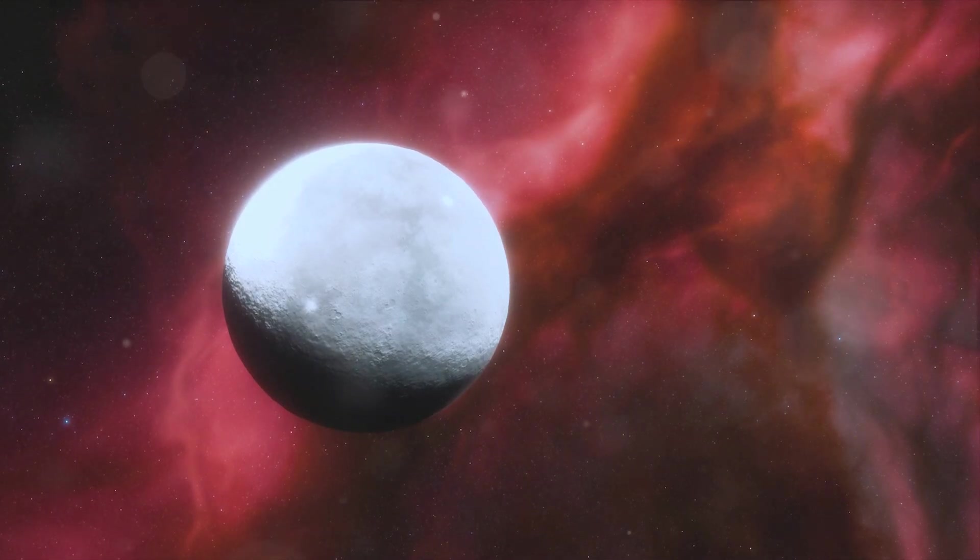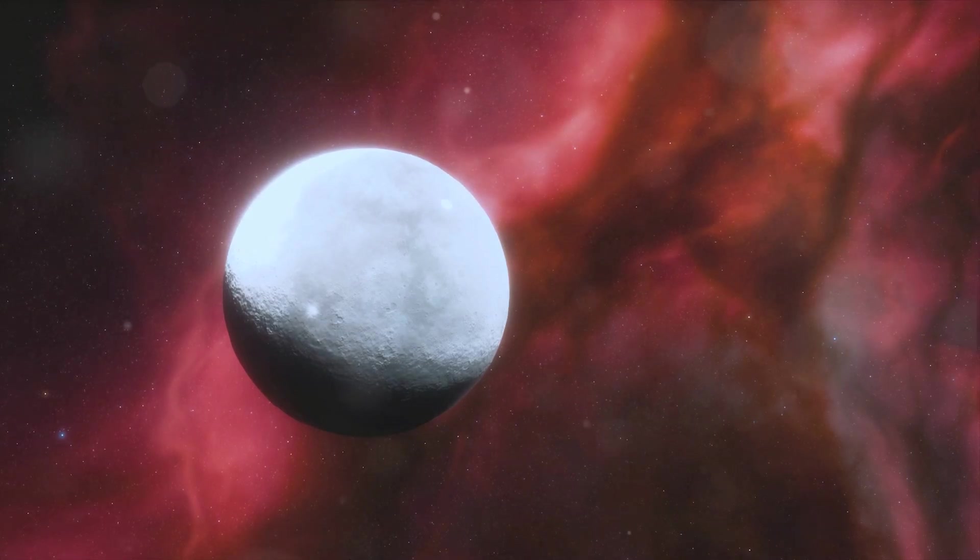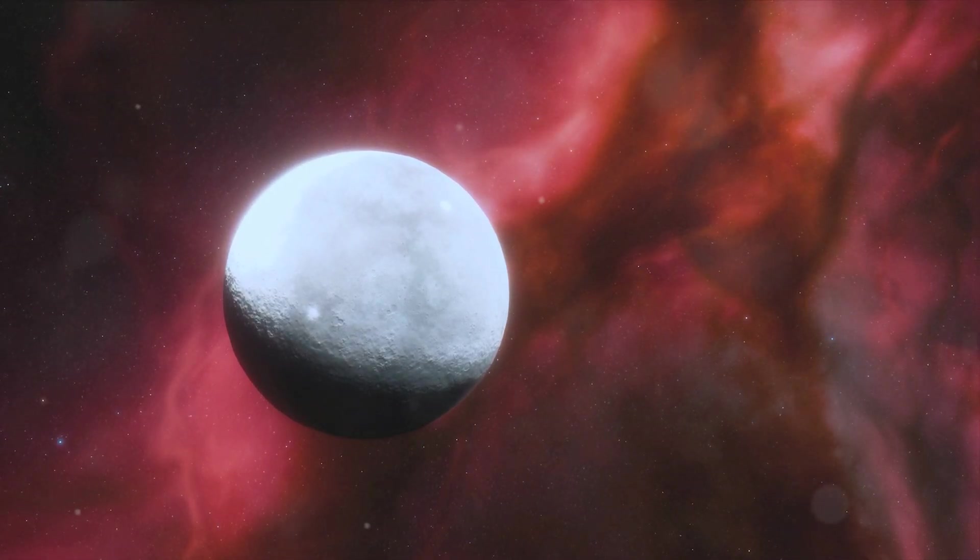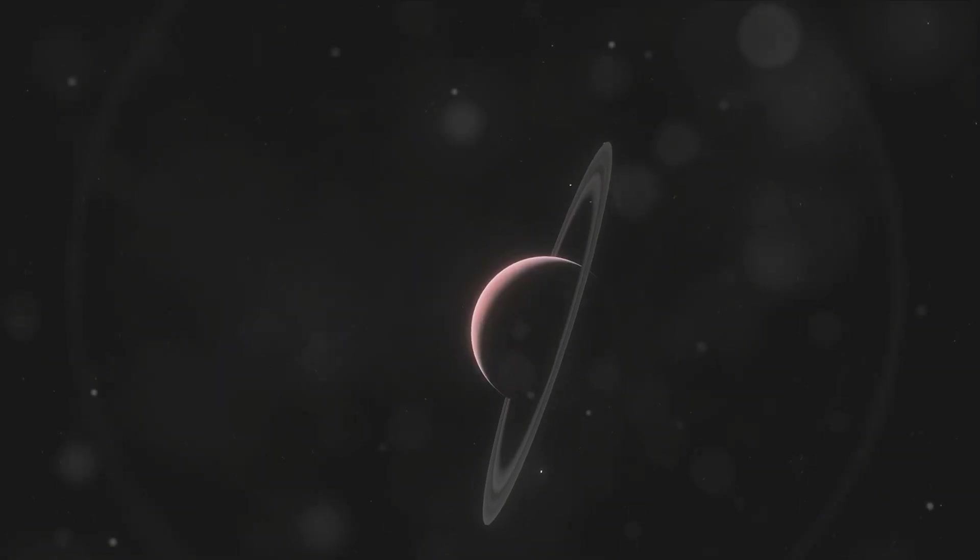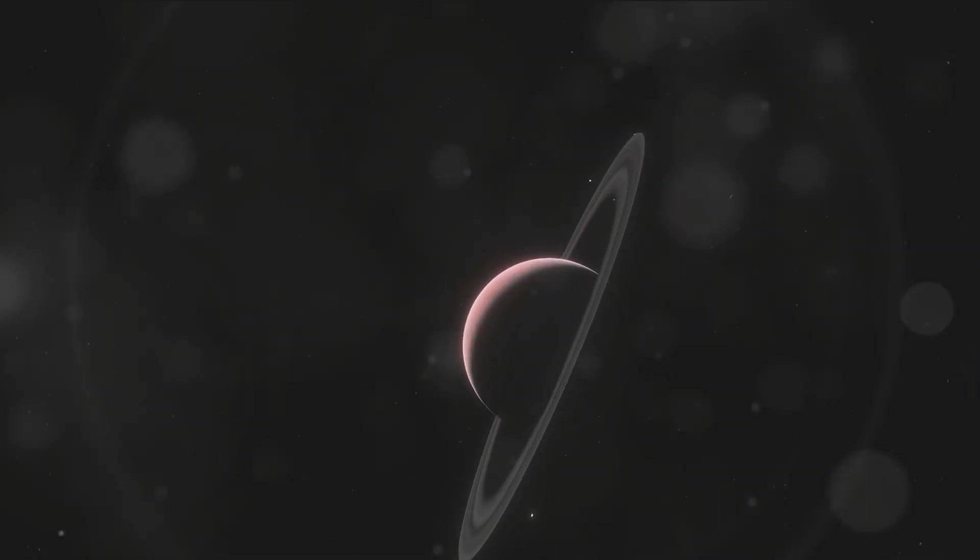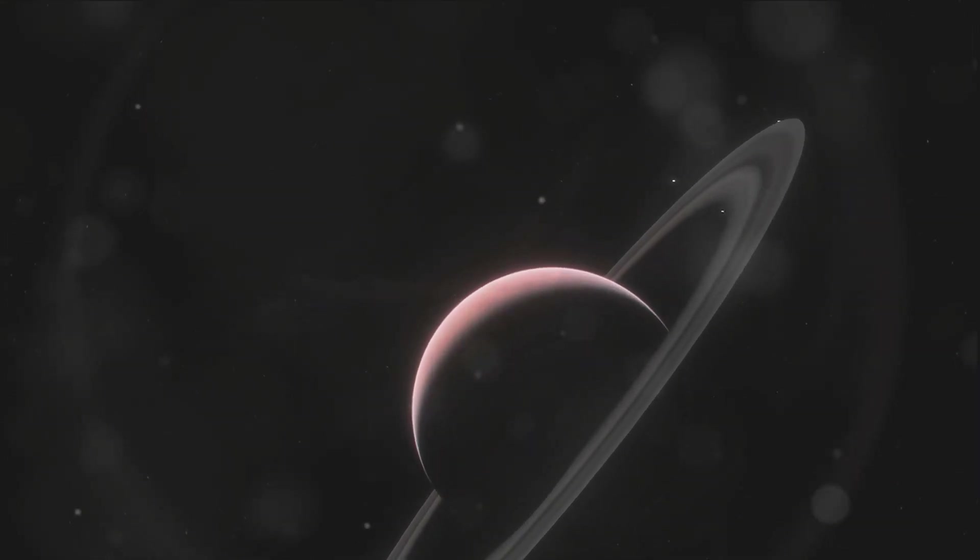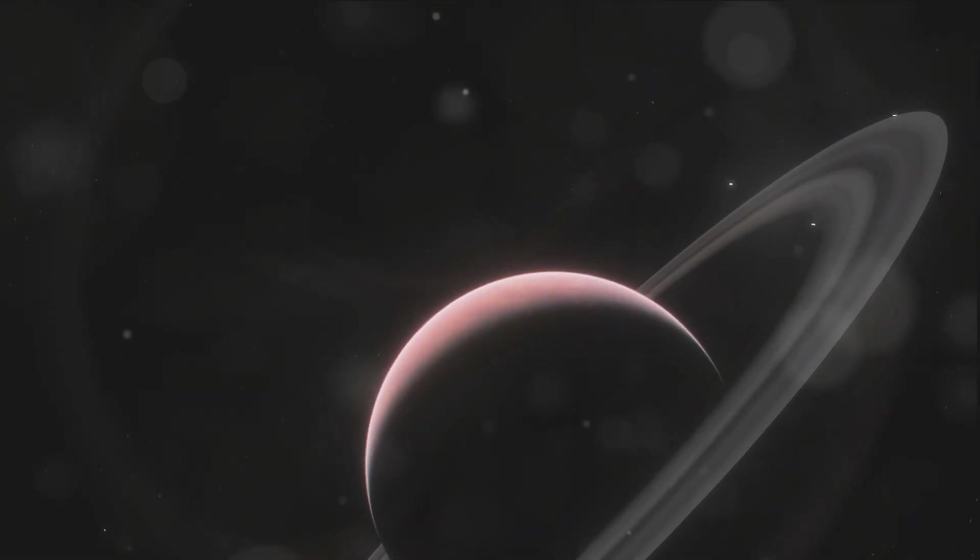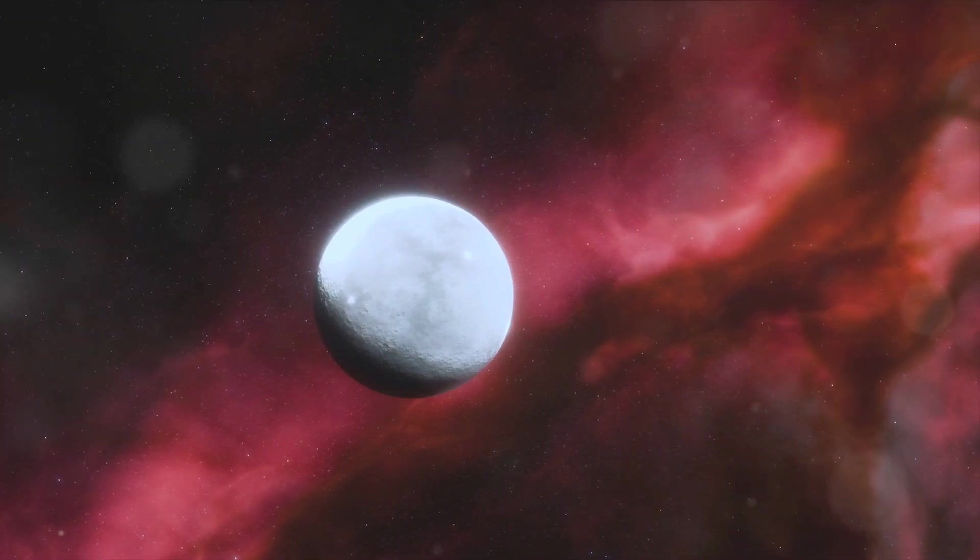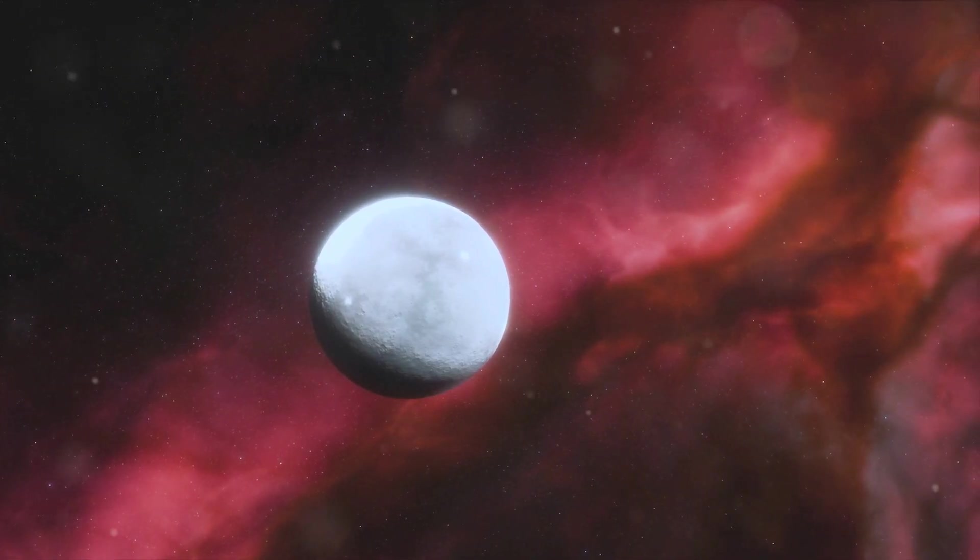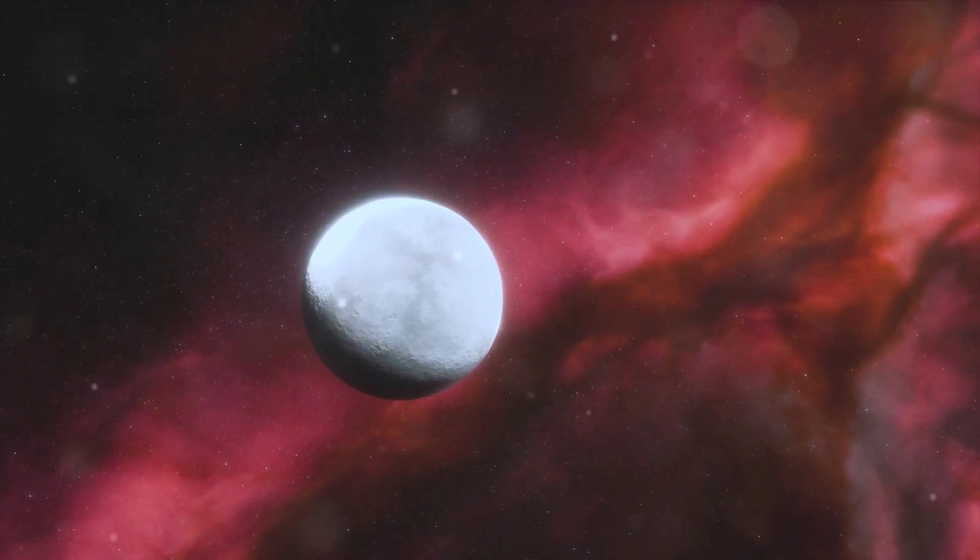These three planets, each with their distinct characteristics, form the first trio of the Kepler 385 system. They're a testament to the vast diversity of worlds that exist in our universe. From the molten surfaces of 385b and 385c to the potentially habitable 385d, these planets offer a fascinating peek into the celestial bodies circling distant stars.